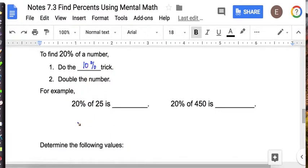Now think about how 10% compares to 20. Right, I could double 10 to get to 20. So all I have to do is use the 10% trick and then double the number. So here's how it works.